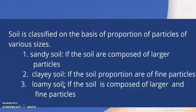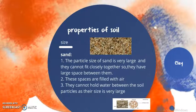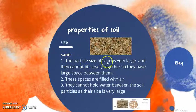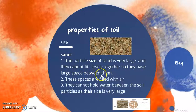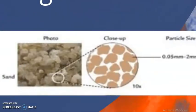Loamy soil is the soil we can see in the garden where more plants can grow easily. Now, the properties of soil vary according to the type of soil. When we look at the size of the soil particles, sands are larger, and as they are larger, they do not fit very close together. So they have large spaces between them, which are filled with air. Because of larger particles and air spaces, they cannot hold much water, so water drains easily from sandy soil.